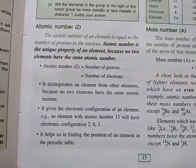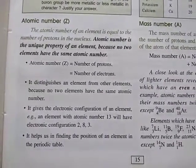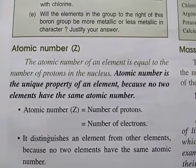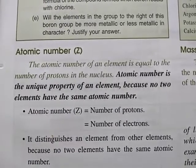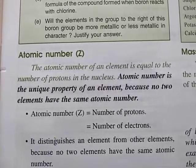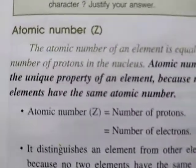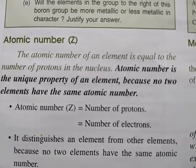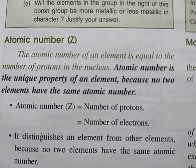Now come to page number 15 — atomic number. All these topics, atomic number and mass number, you are already familiar with from class 9. The atomic number of an element is equal to the number of protons in the nucleus. This atomic number is represented by the capital letter Z, and Z equals the number of protons. We also know that the number of protons equals the number of electrons in an atom.